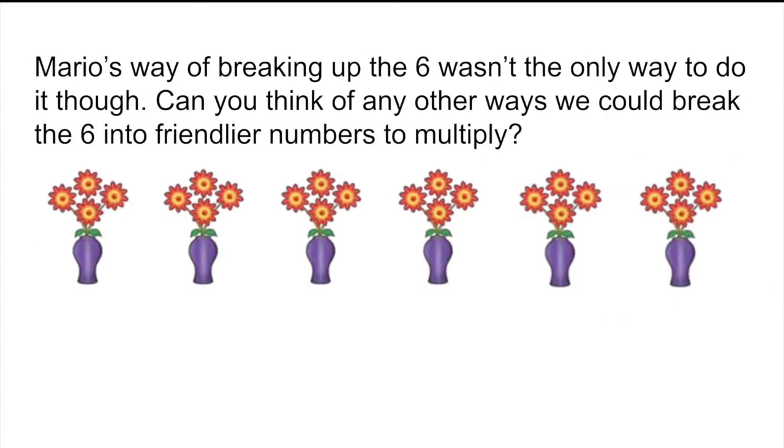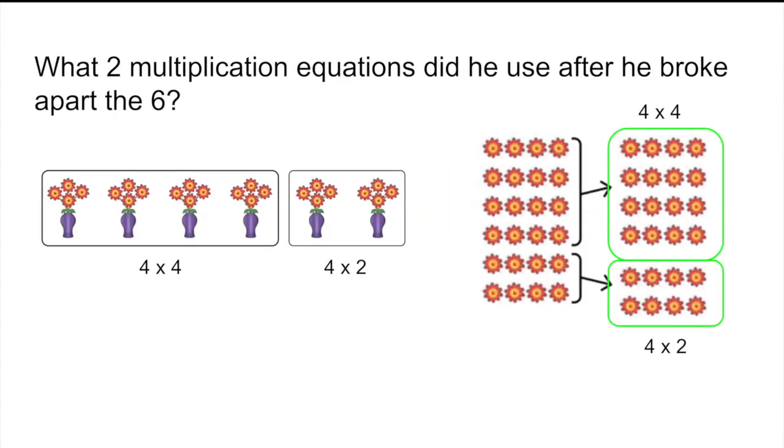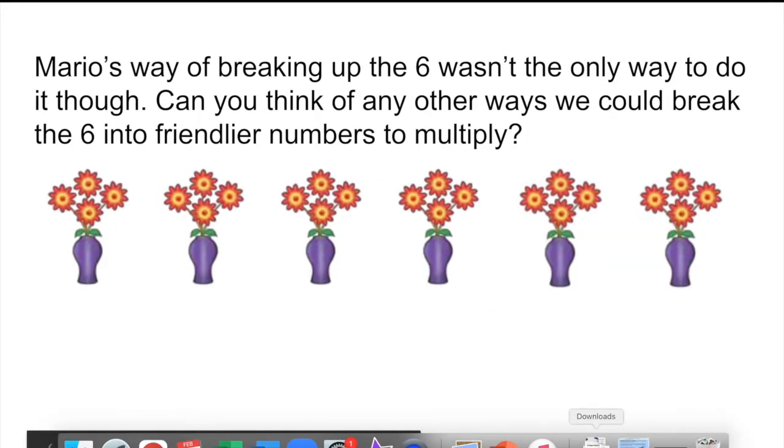But Mario's way of breaking up the six wasn't the only way to do it. Can you think of any other ways we could break six into friendlier numbers to multiply? We're not changing the number of flowers in each vase, but perhaps you would organize it differently. Instead of breaking the six into a four and a two, how would you break it? Pause the video if you need more time, but I'm going to keep going now.